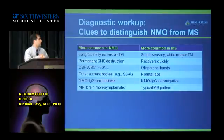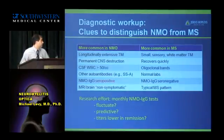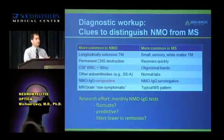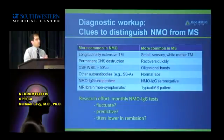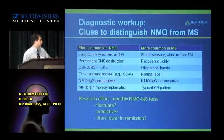NMO patients often test positive for the antibody, but there are patients who test negative who truly have NMO, and those patients are harder to identify. Our consortium is planning to draw blood from NMO patients every month to understand what factors in the blood are responsible for creating disease and what factors are good biomarkers for remission — another part of this project we're doing in collaboration with Mayo and UT.